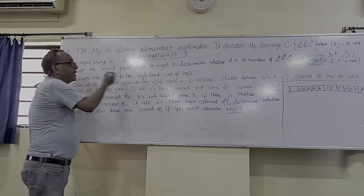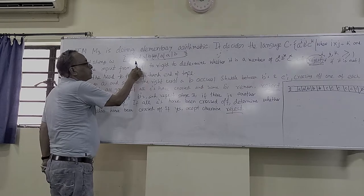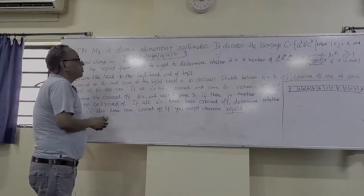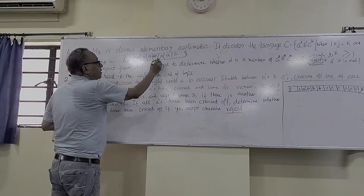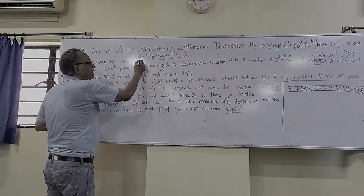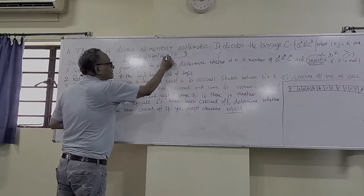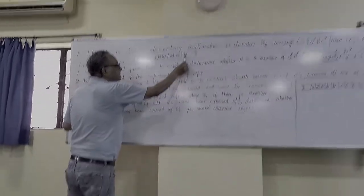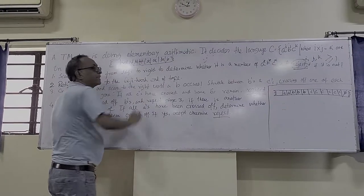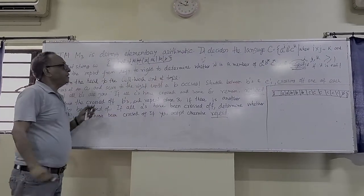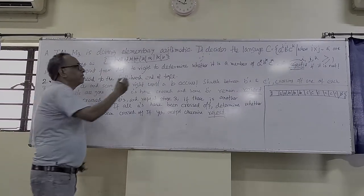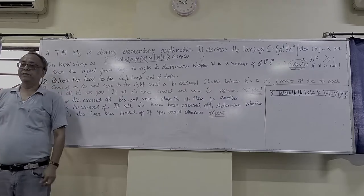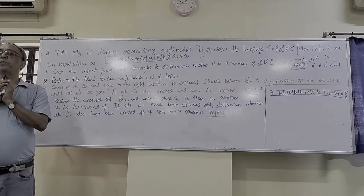What the Turing machine does for W*W: it first goes and checks whether the star is there. If the star is there, it comes back, crosses one A, then goes again and crosses the corresponding A on the other side. Then it comes back, crosses B, crosses B, and checks whether any uncrossed symbols remain. If any uncrossed symbol is there, it will not accept. If everything is crossed, the Turing machine accepts. This language W*W cannot be handled by deterministic or non-deterministic pushdown automata.